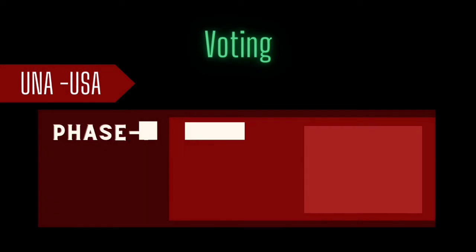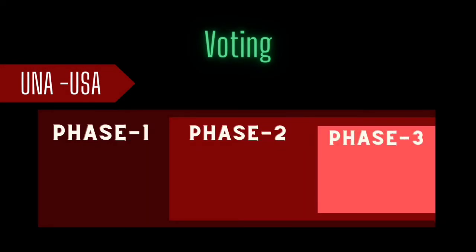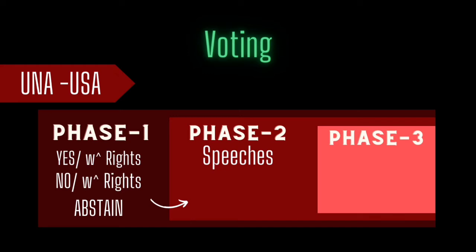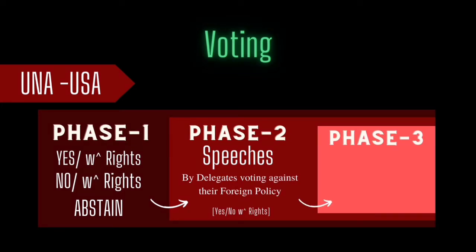Under the UNA-USA procedure, this vote happens in three phases. Phase 1: delegates can vote yes, yes with rights, no, no with rights, or abstain, depending on their voting preference. Phase 2 is for delegates who have voted yes or no with rights — which is fundamentally against their foreign policy or portfolio beliefs — and would like to explain their voting stance. Delegates get the right to speak, generally for one minute each, to explain themselves if they have voted against their foreign policy. After this phase, the final third phase arrives where delegates have to vote yes or no on the draft resolution.